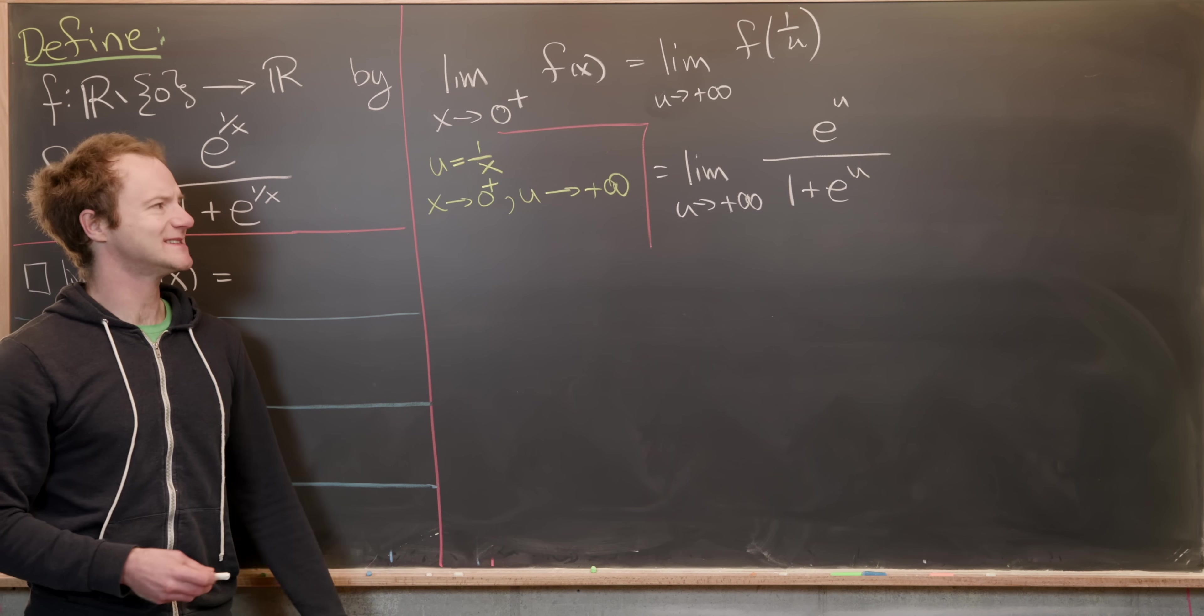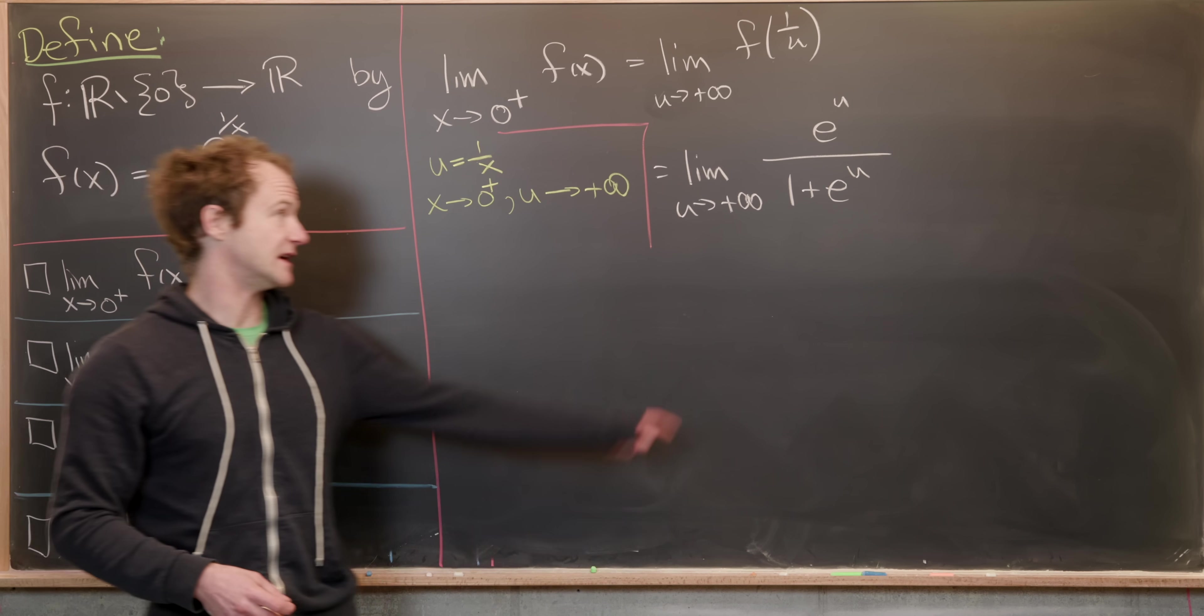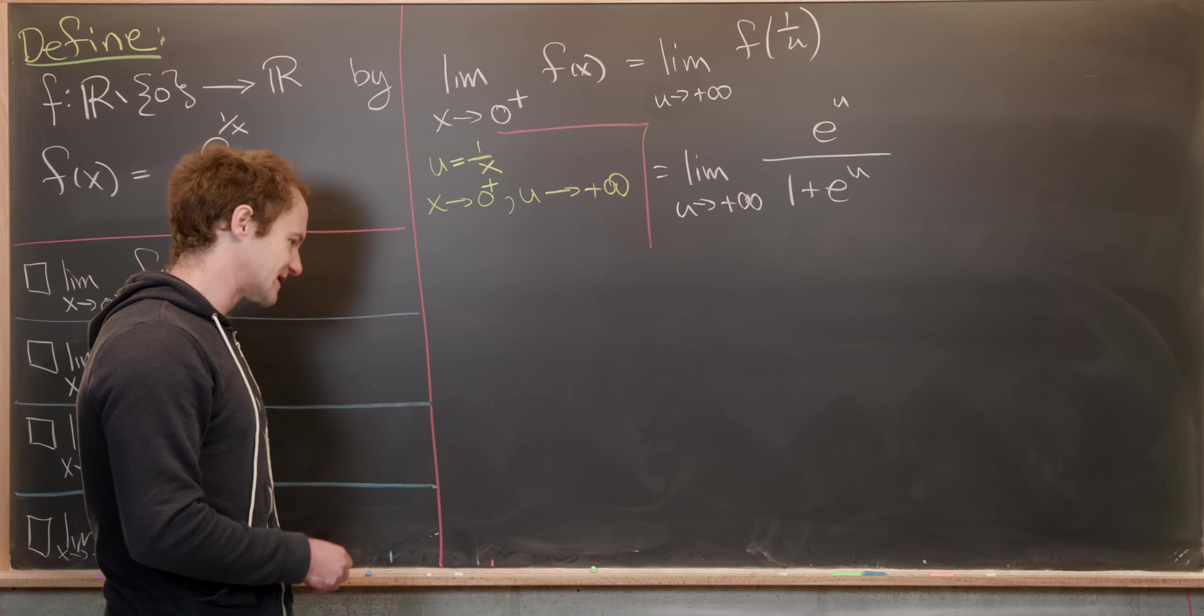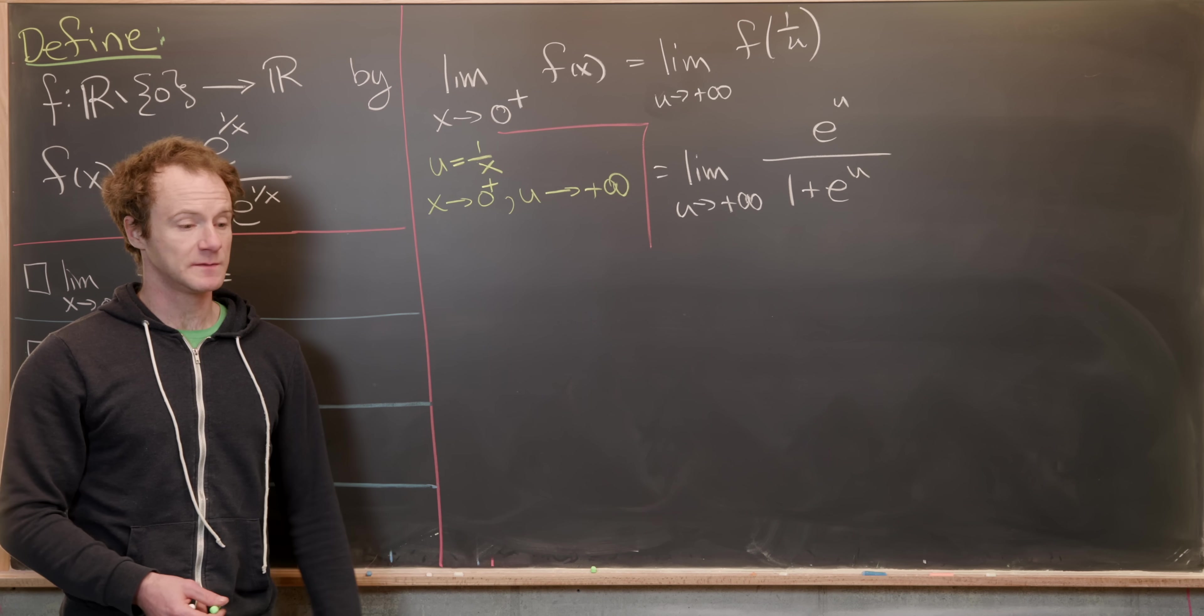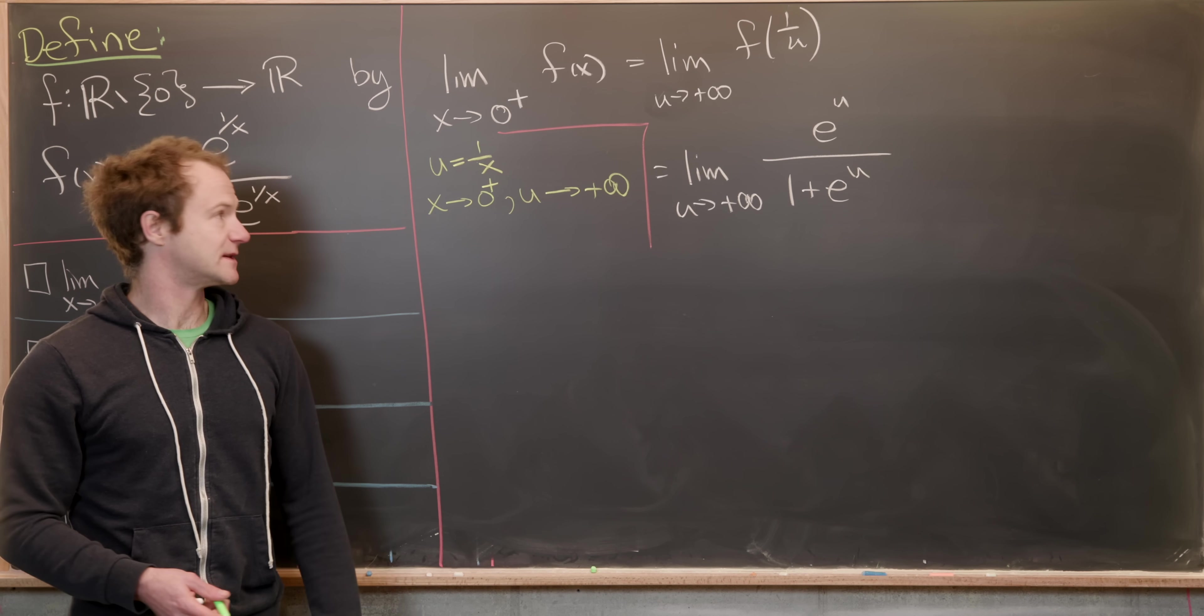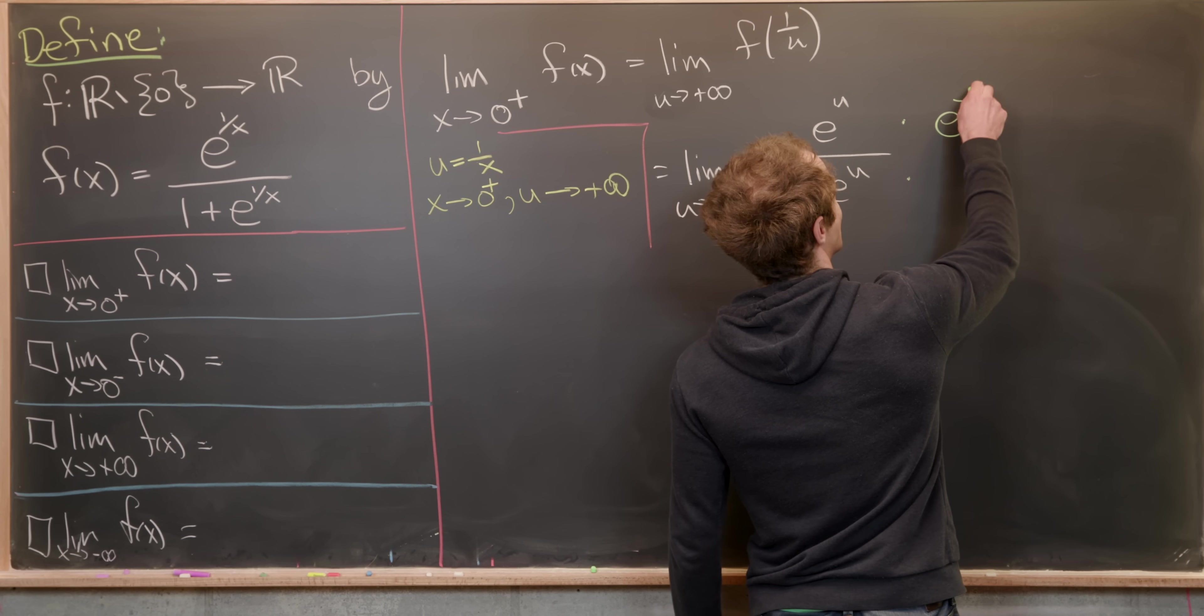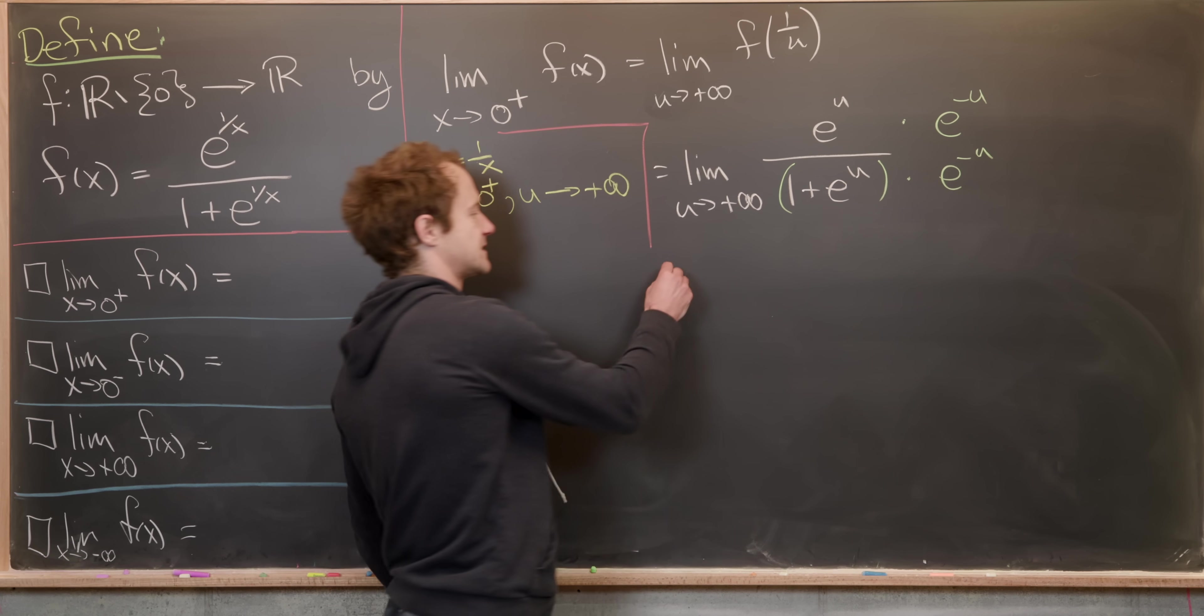Now I want to notice that this is an indeterminate form. If u is approaching positive infinity, this looks like infinity over infinity. So there are obviously a bunch of ways that you could solve this from this point, you could use L'Hopital's rule. But maybe what I want to do is a little simpler, I'm going to multiply the numerator and the denominator by e to the minus u.